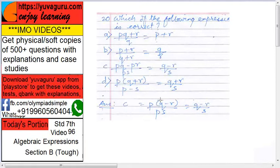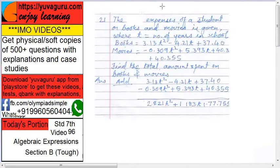The expenses of a student on books and movies is given, where t equals number of years in school. Books equals to this equation and movies equals to this equation. Find the total amount spent on books and movies. It's quite simple - you have to just add them. Books plus movies, add these. t² common here, this is minus, this is minus.